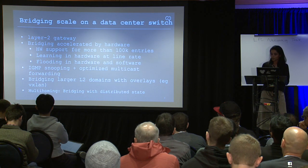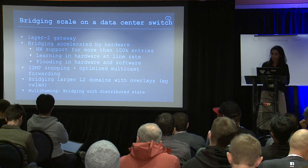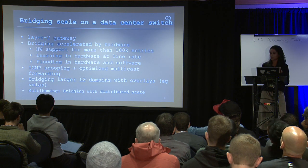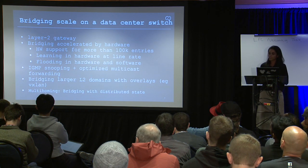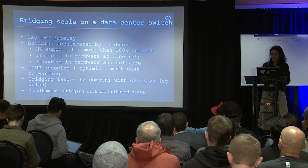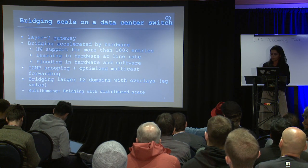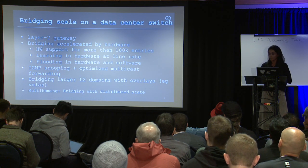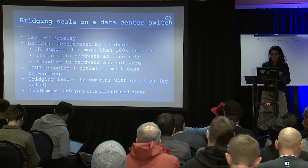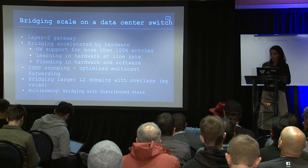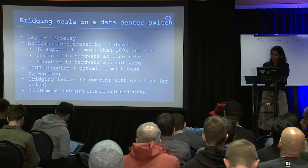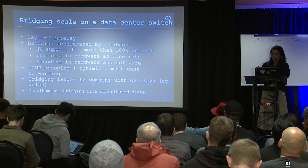Bridging on the switch is accelerated by hardware, and hardware learns at line rate. The hardware supports 100K entries or more. In software, Linux bridge FDB can handle millions of entries. But on these switches, the hardware is capable of that much, and the CPU is low-end. It has to just learn and populate these FDB entries in the database. Flooding occurs in hardware, and sometimes if hardware cannot handle the packet, it punts to CPU. The goal is to reduce flooding.